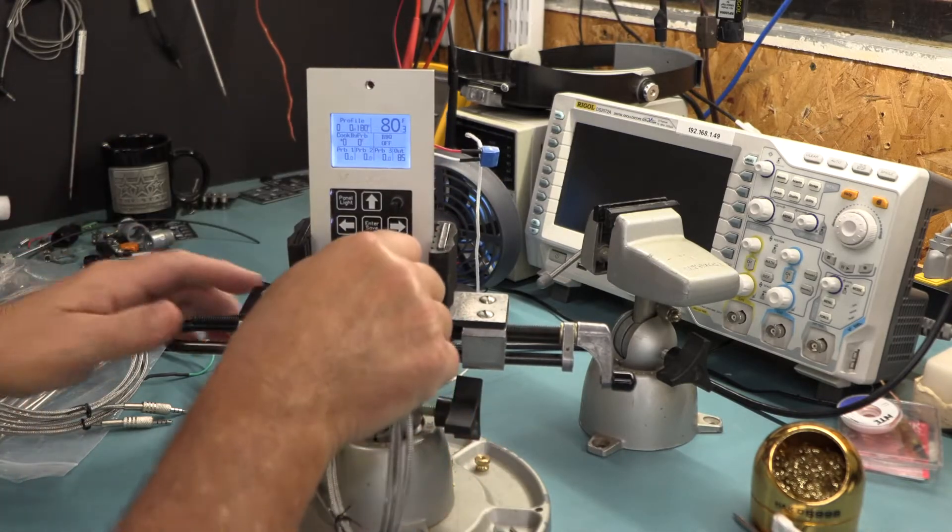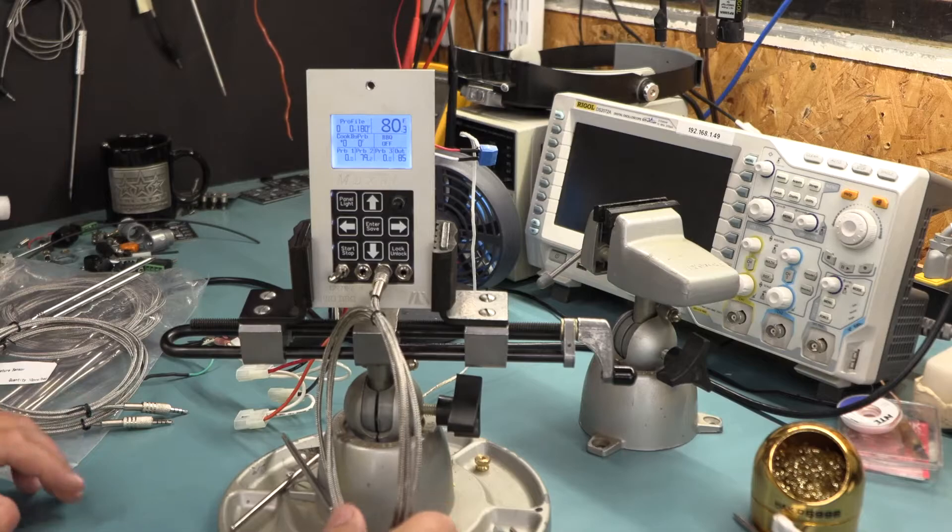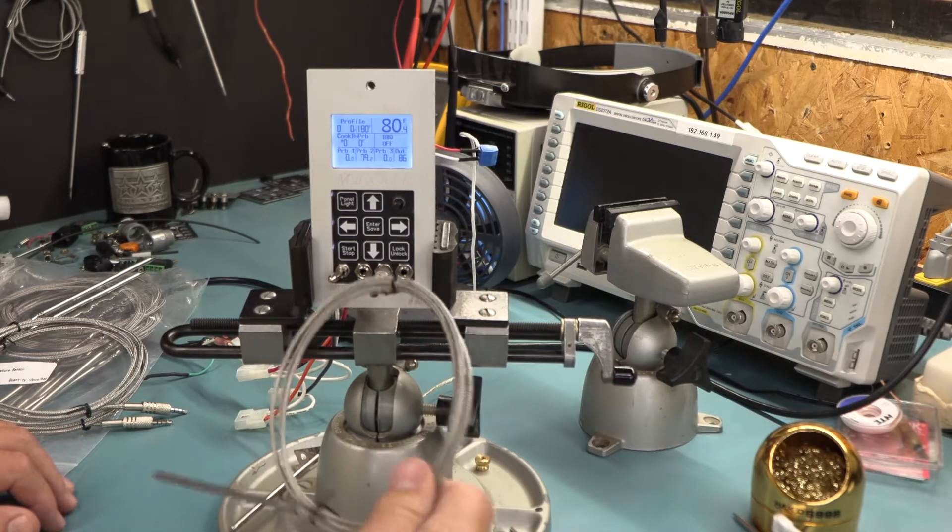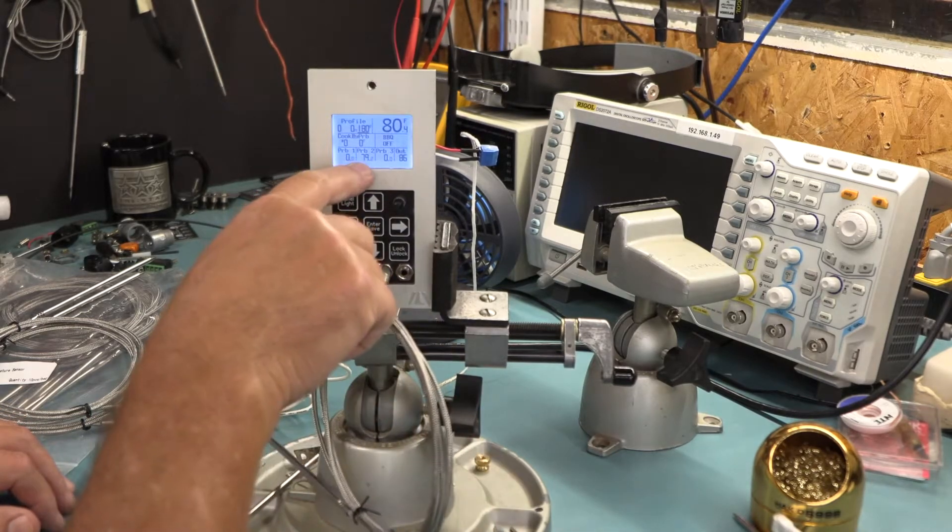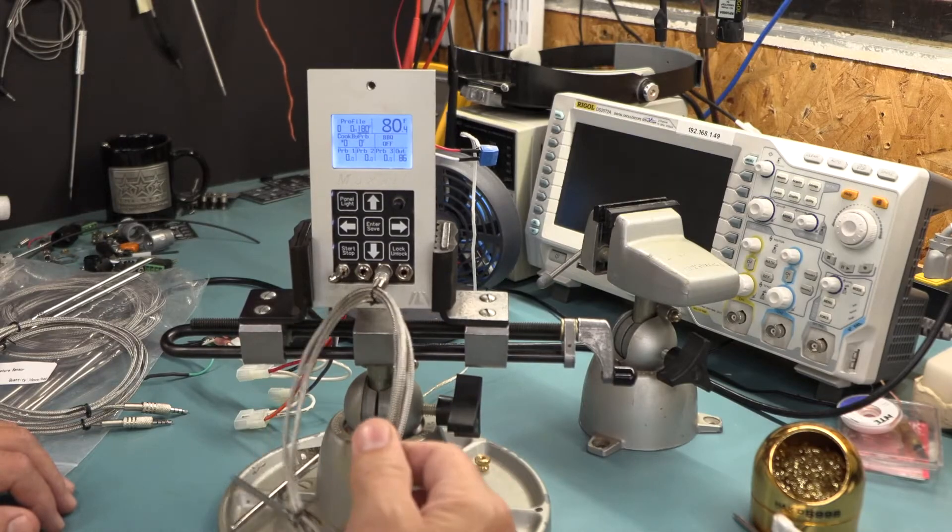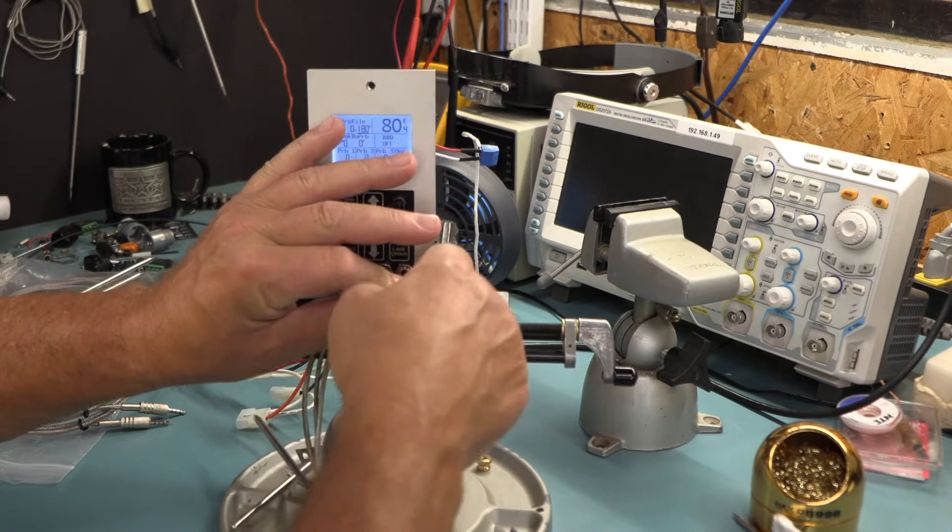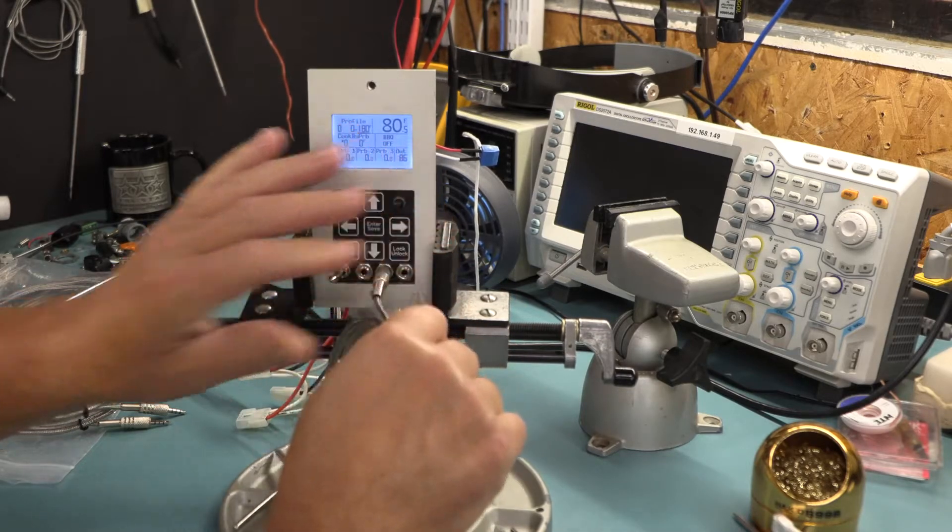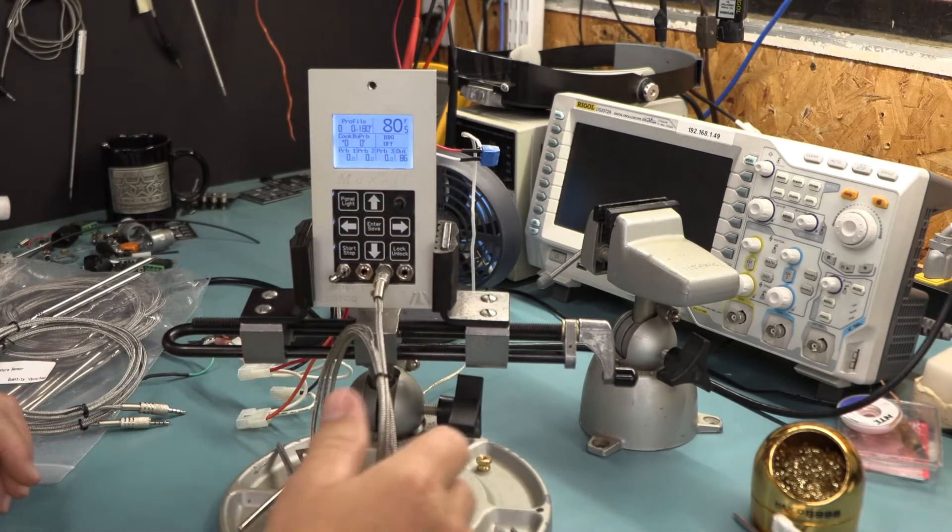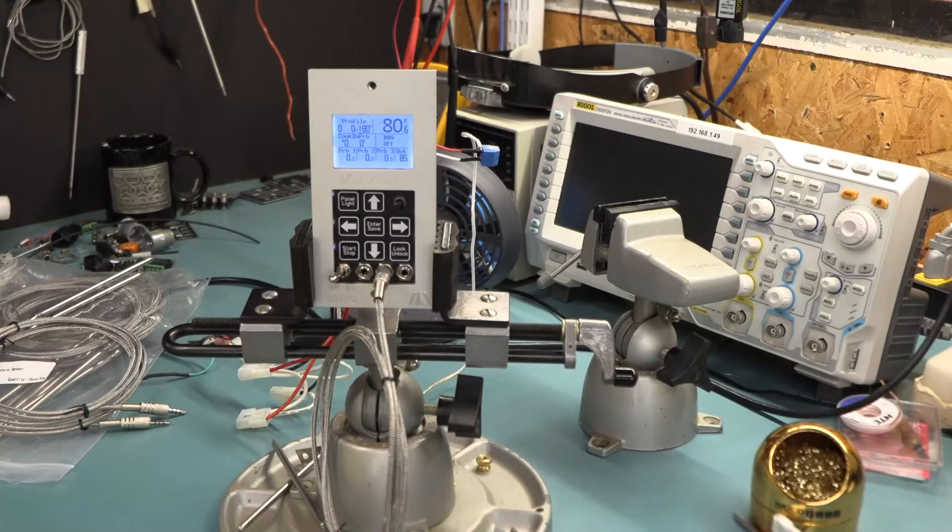I do test all these meat probes before I send them out. And I do the jiggle jiggle jiggle test on them, just like I was showing you. Because I don't want people... You pay 20 bucks for a meat probe, I don't want to see them coming back. Jiggle jiggle jiggle. So you can see it's reading now. Oh!